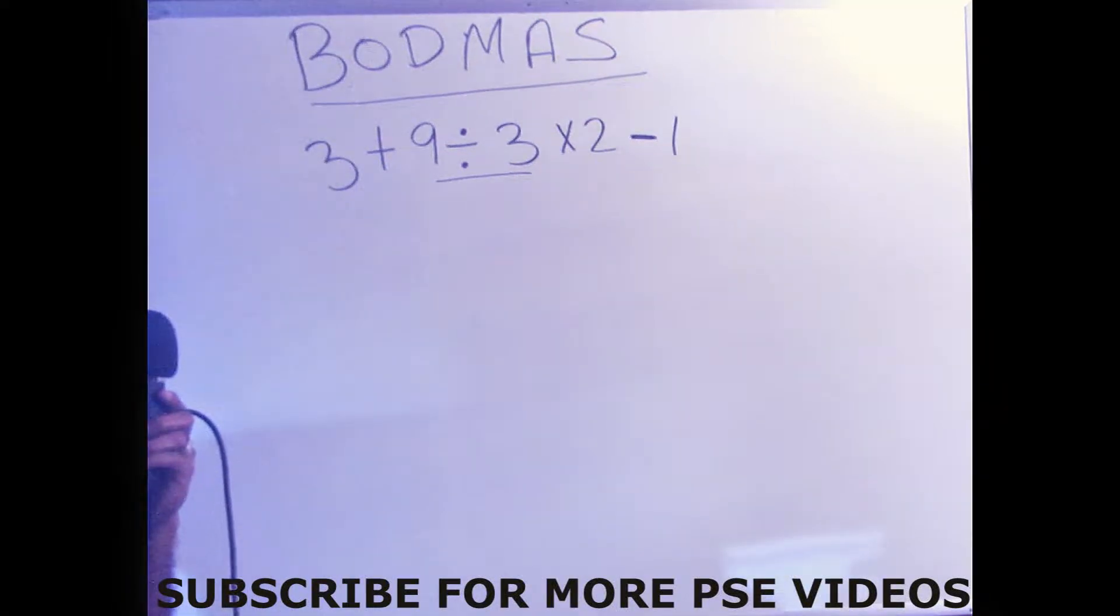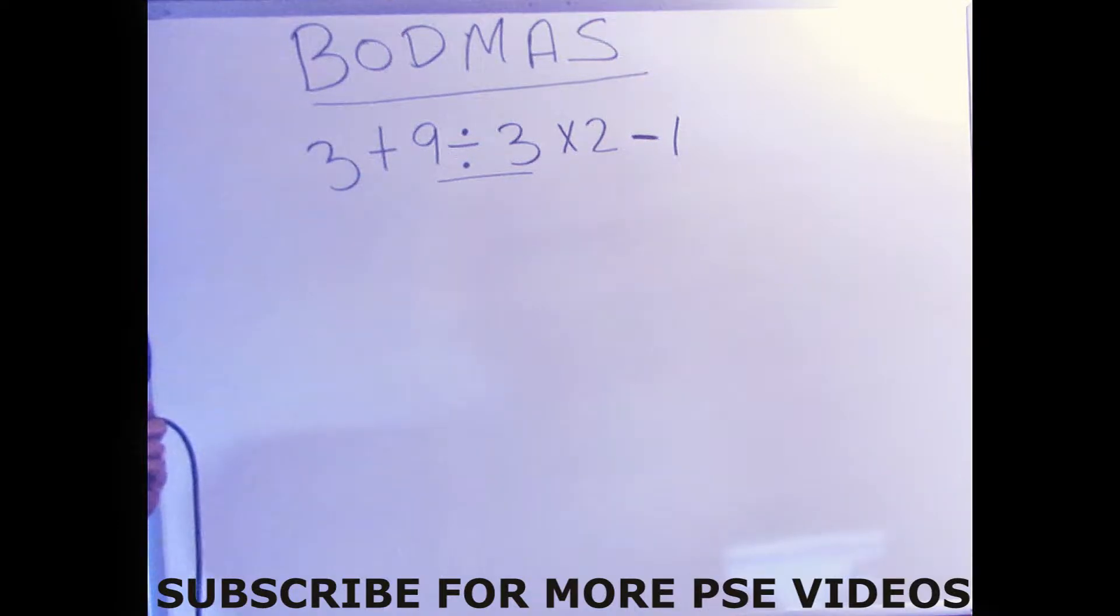A very pleasant good morning students. As you look on the board, you can see that we're going to solve a BODMAS math problem. This is usual in the PSC paper too. The problem says 3 plus 9 divided by 3 times 2 minus 1.